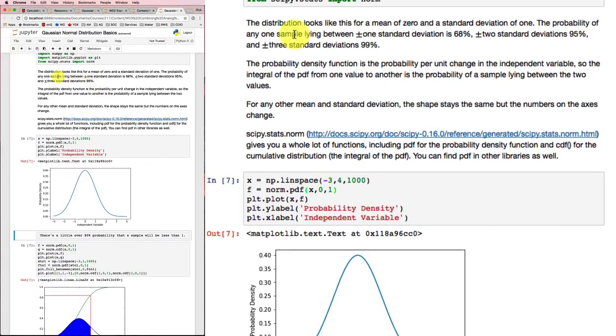So looking up here, a couple of things to notice. Notice the probability of any one sample lying between plus or minus 1 standard deviation. That is between minus 1 and 1, if our standard deviation is 1. The probability of it fitting in that region? 68%. Plus or minus 2 standard deviations? Out to here at 2 and out to here at minus 2. That area in there accounts for 95% of the probability.